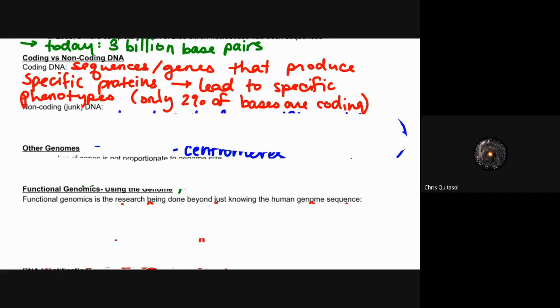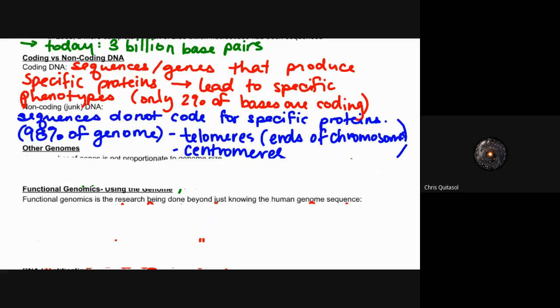So when you think about the billions of DNA bases that we have in our chromosomes, only two percent are used for coding. As you can imagine, with non-coding DNA, it's sequences that do not code for specific proteins—that's 98 percent of the genome. Those are what's called telomeres and centromeres, which we don't have to get into too much detail now, but telomeres are the caps at the end of our chromosomes, and the centromeres help to wind everything up.